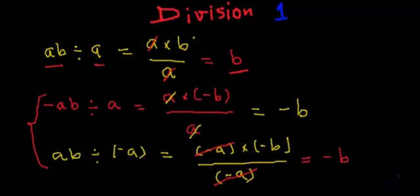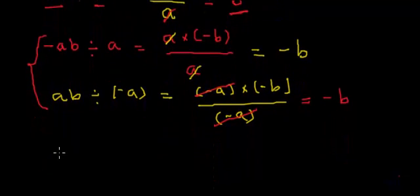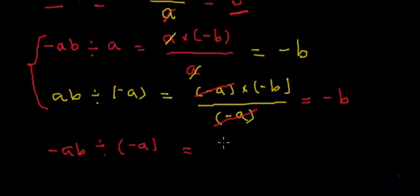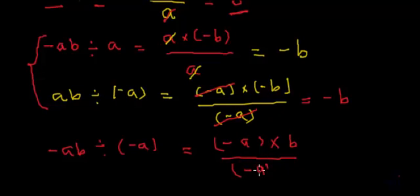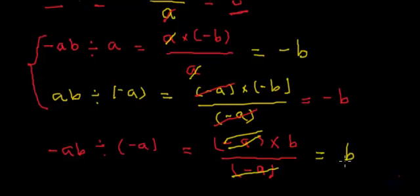Now let's take one more example and understand how signs behave when both terms are negative. So that means minus ab divided by minus a — what happens? Minus ab can be written as minus a multiplied by b, and then everything is divided by minus a. So this minus a and this minus a will get cancelled, leaving the quotient as plus b. So when both the dividend and divisor are negative, the quotient will be positive.